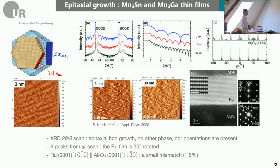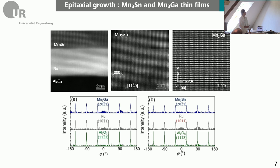After optimizing the ruthenium buffer layer growth, we tried to deposit manganese-3-tin and gallium on top of it. As you can see from these two TEM images, we found that both systems were grown epitaxially while having the epsilon phase that we aimed for.